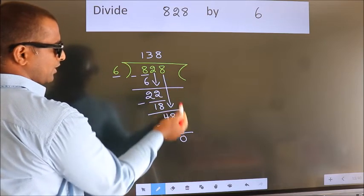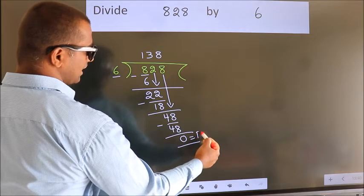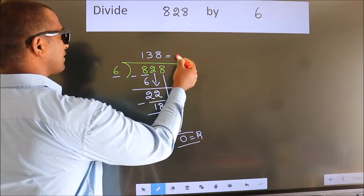No more numbers to bring it down. So we stop here. This is our remainder. This is our quotient.